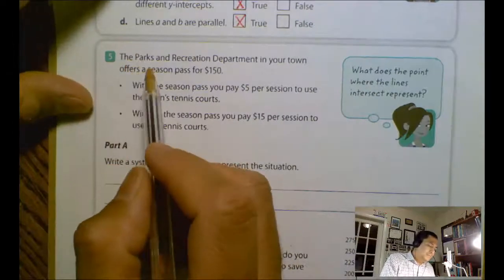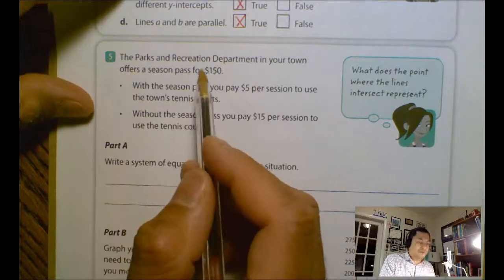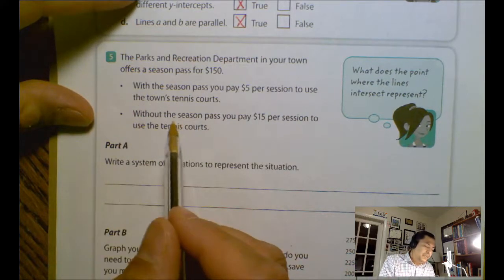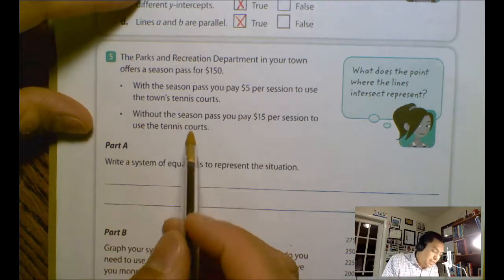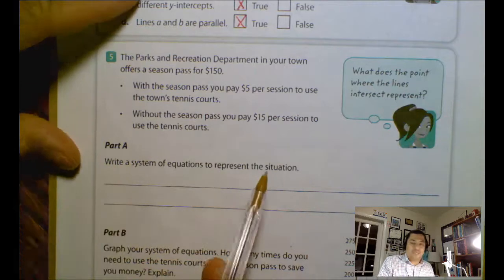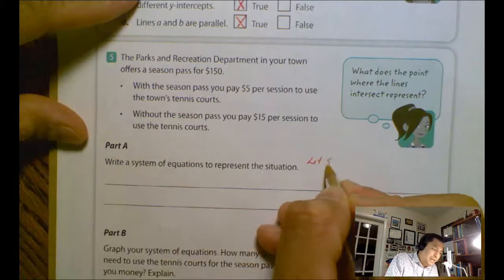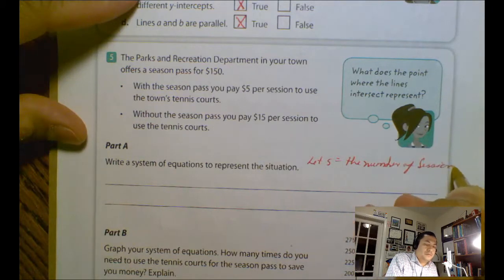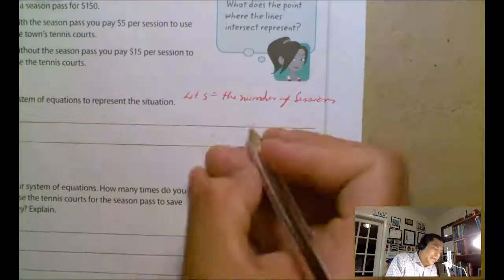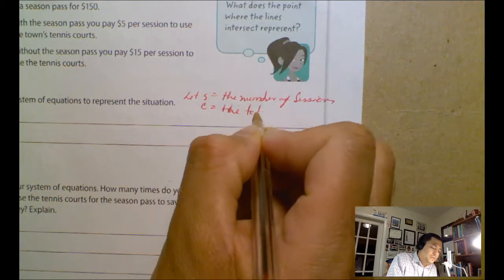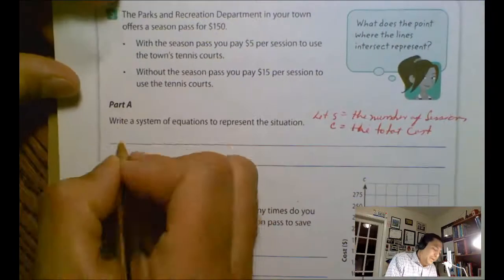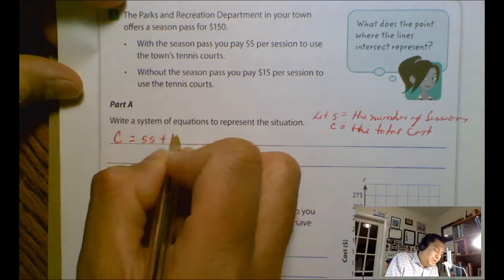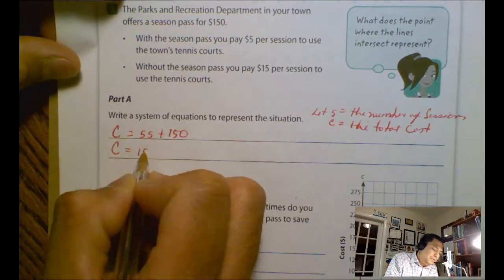Problem number five: The Parks and Recreation Department in your town offers a season pass of $150. With the season pass, you pay $5 per session to use the town's tennis court. Without the season pass, you pay $15 per session. Part A: Write a system of equations to represent the situation. I'm going to let S equal the number of sessions and C is the total cost. So my equations will be C equals 5S plus 150, and then C equals 15S.